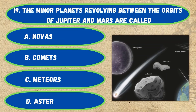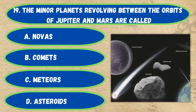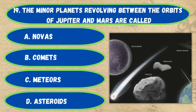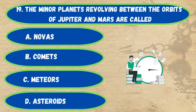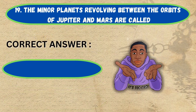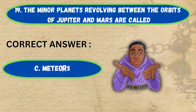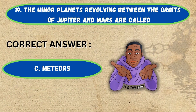Question number 19. The minor planets revolving between the orbits of Jupiter and Mars are called: option A, novas; B, comets; C, meteors; D, asteroids. The correct answer is option C, meteors.